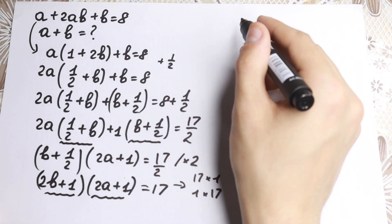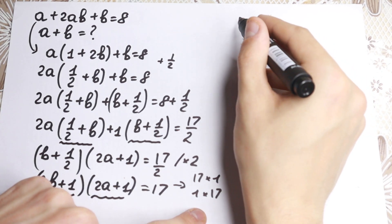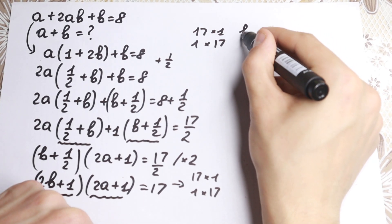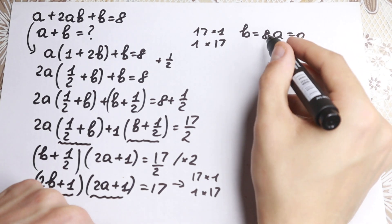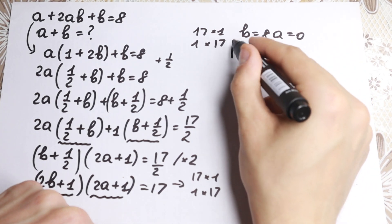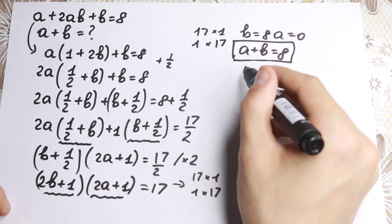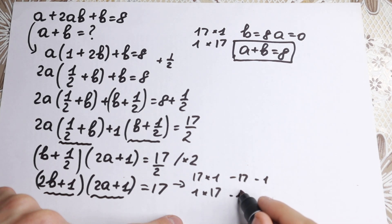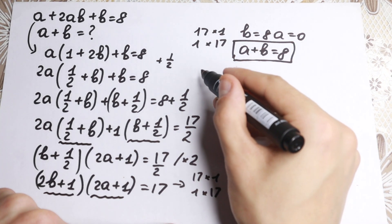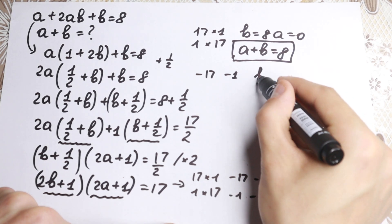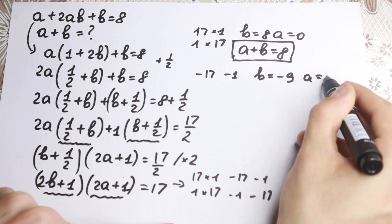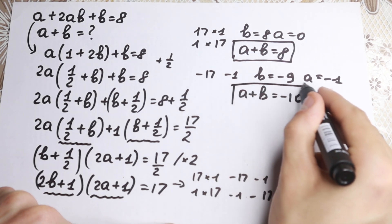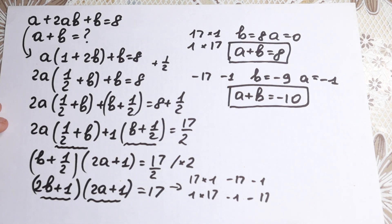For the first combination, 17 times 1 and 1 times 17: we get b equal to 8, a equal to 0, and so a plus b equal to 8. This is our first answer. For the second combination with negatives, minus 17 times minus 1: we get b equal to minus 9, a equal to minus 1, and so a plus b equal to minus 10. So we find two values, two combinations for this problem.